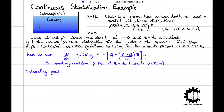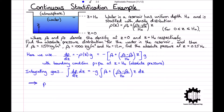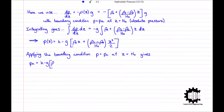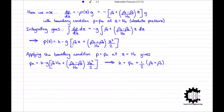Integrating the pressure distribution gives P at a height Z equals some constant K minus G times rho 0 Z plus rho S minus rho 0 divided by H0 times by Z squared divided by 2. Then applying the boundary condition P equals PA at Z equals H0 gives PA equals K minus G times rho 0 H0 plus rho S minus rho 0 divided by H0 times H0 squared divided by 2, which results in K equals PA plus half times rho S plus rho 0 times G H0.